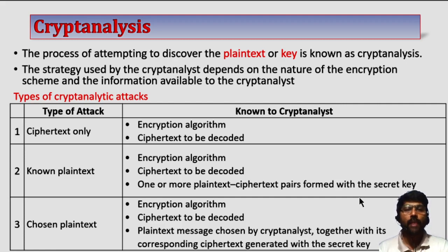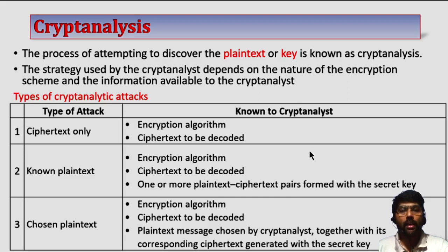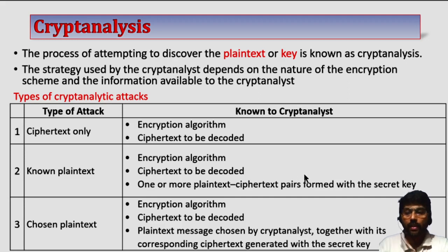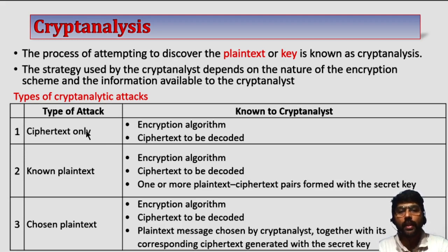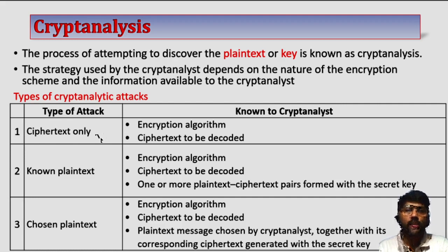That is, which type of language is being used — if it is plaintext, which type of language such as English or French. If it is an executable file, an exe file, or a Java source file, or any other accounting file — that means he has some knowledge of which type of plaintext the ciphertext was created from. This ciphertext-only attack is very easy to defend; it is hard for the attacker but easy for the cryptographer. This type of attack will be done only when the encryption algorithm is very weak.